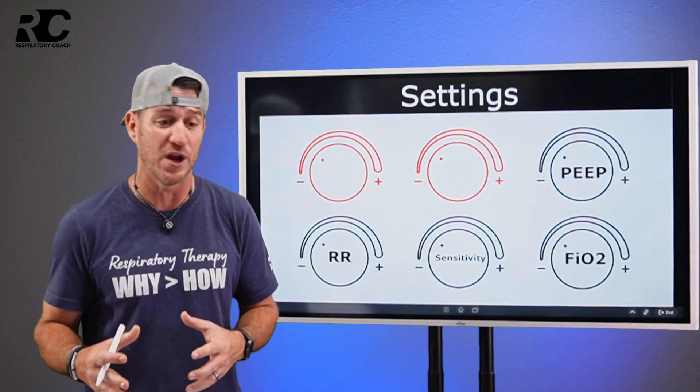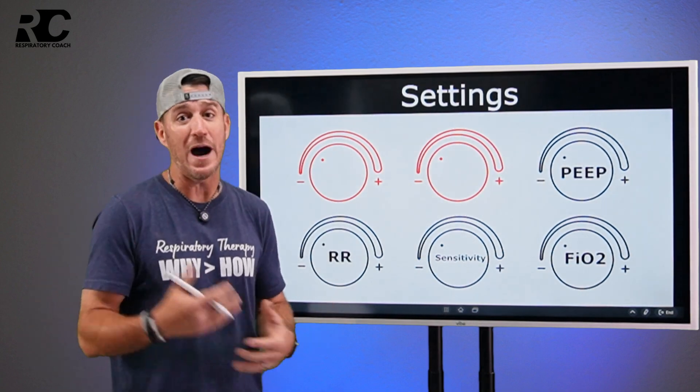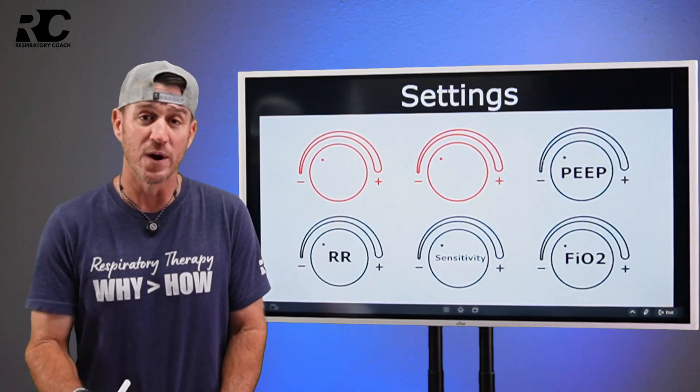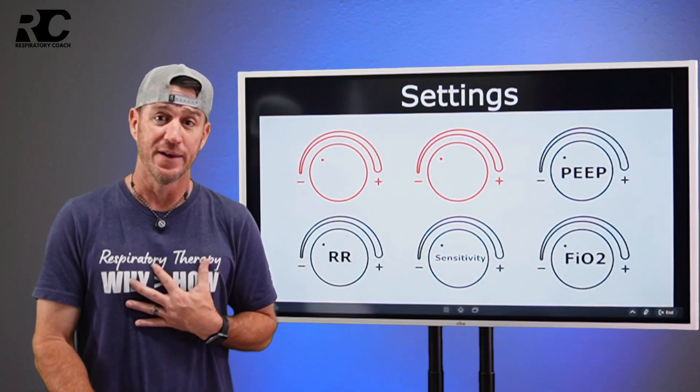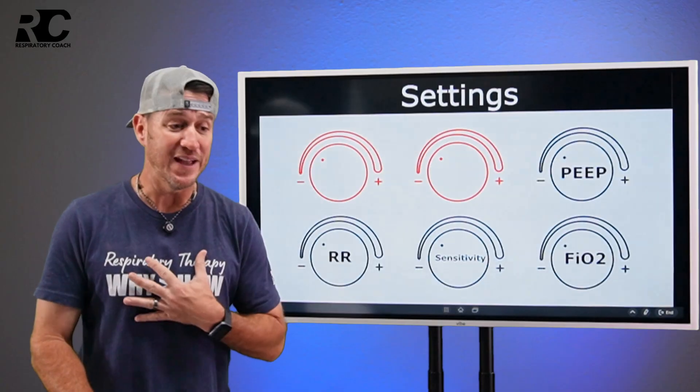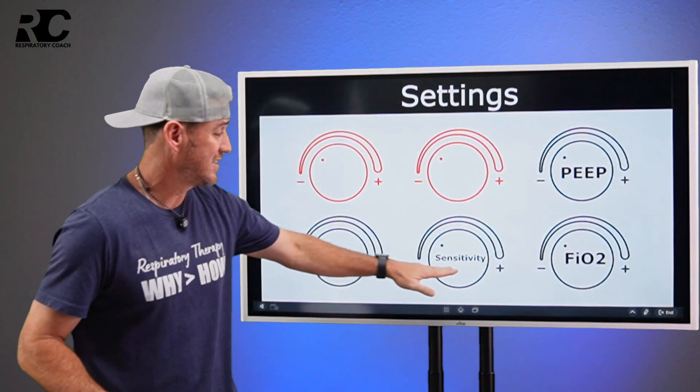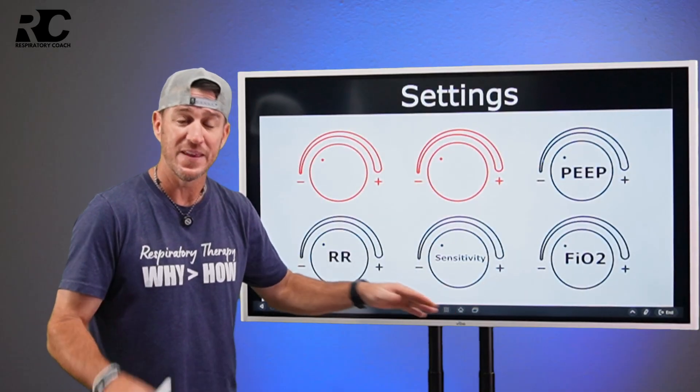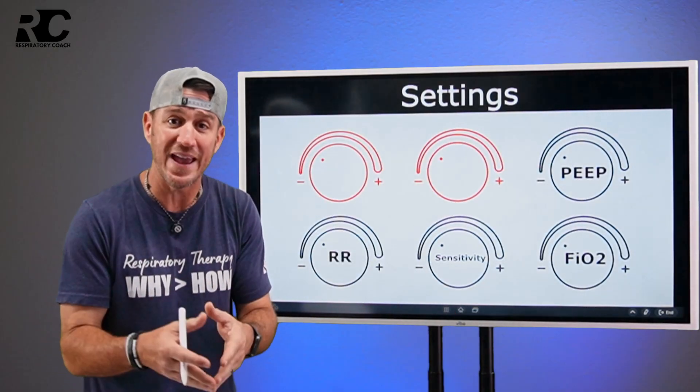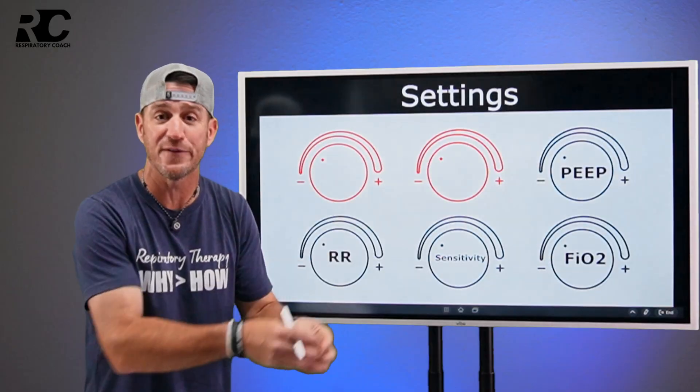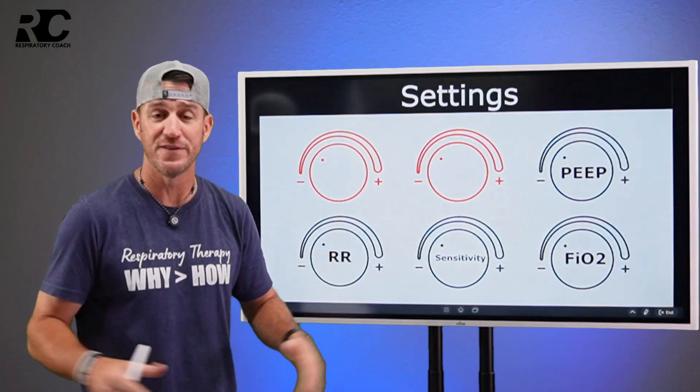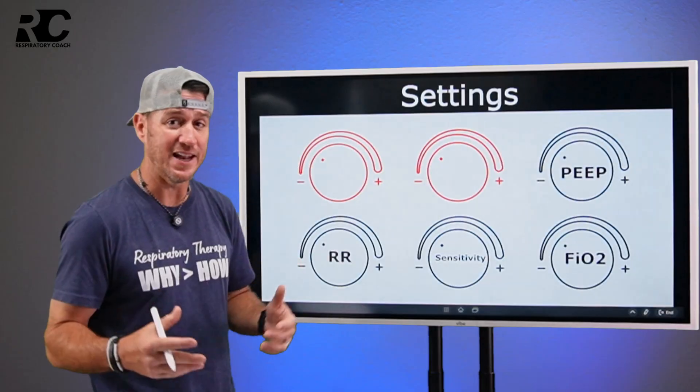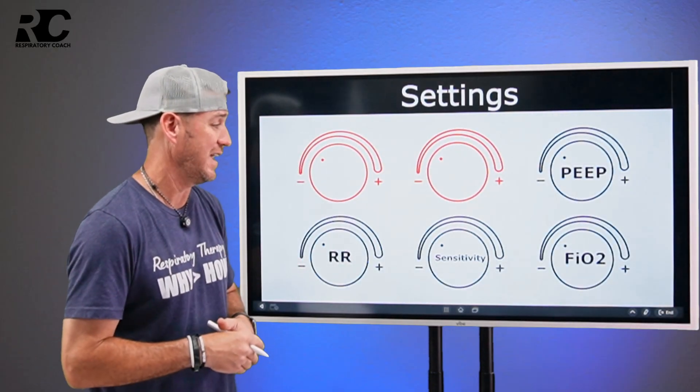It may think the patient's asking for a breath, but they're not really. Or the opposite of that may be true also where the patient is trying to take a breath, but the vent's not recognizing it because this setting is set incorrectly. So sensitivity is the ventilator's way of detecting patient efforts. Every vent mode has a sensitivity setting, at least that I can think of off the top of my head.